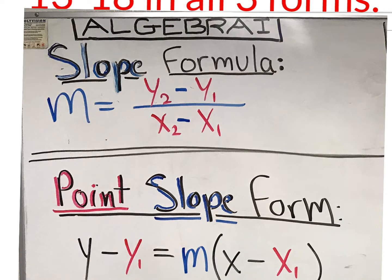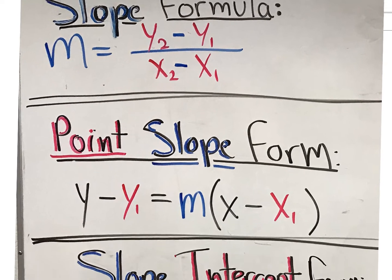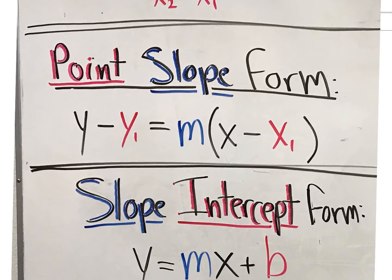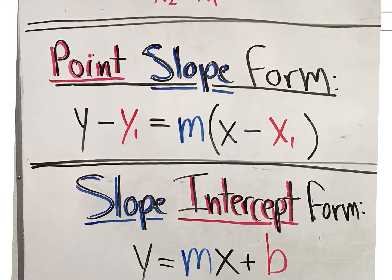We also just recently learned about point-slope form. That's y minus y1 equals m parenthesis x minus x1. I recommend writing what's in black with blank spots, and then just plugging in your slope right here, and your coordinate — your point, your x1, y1 — right here.